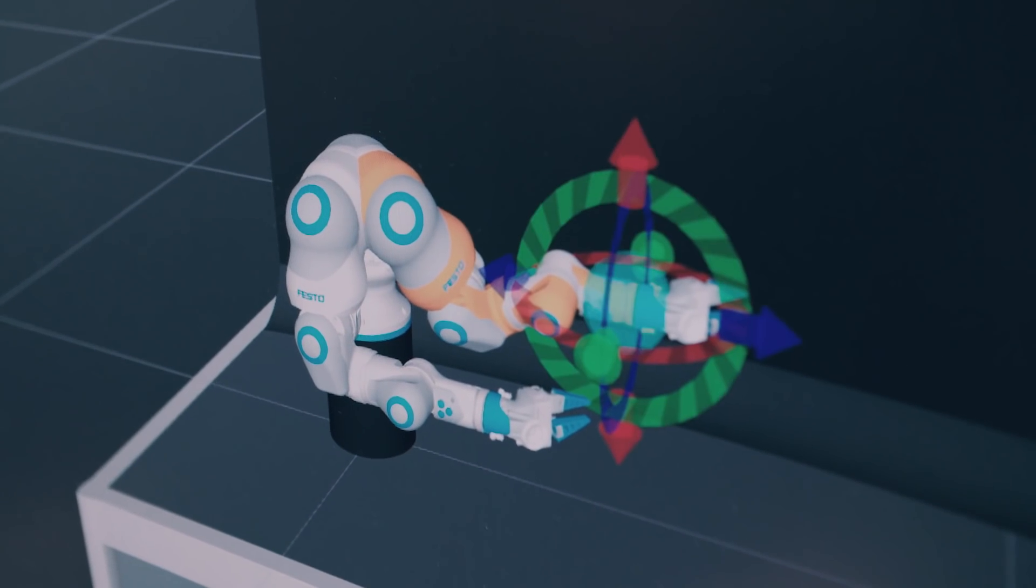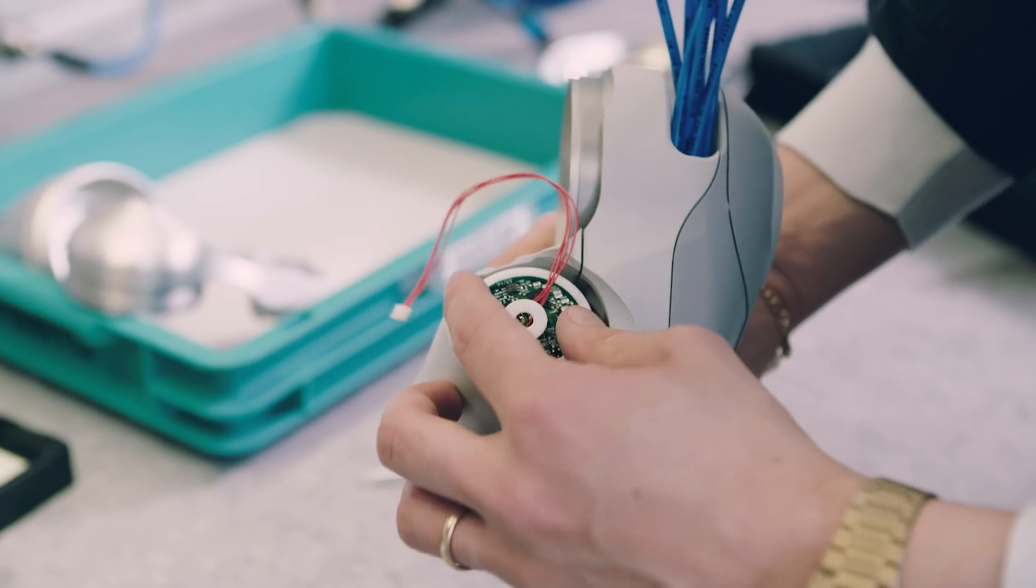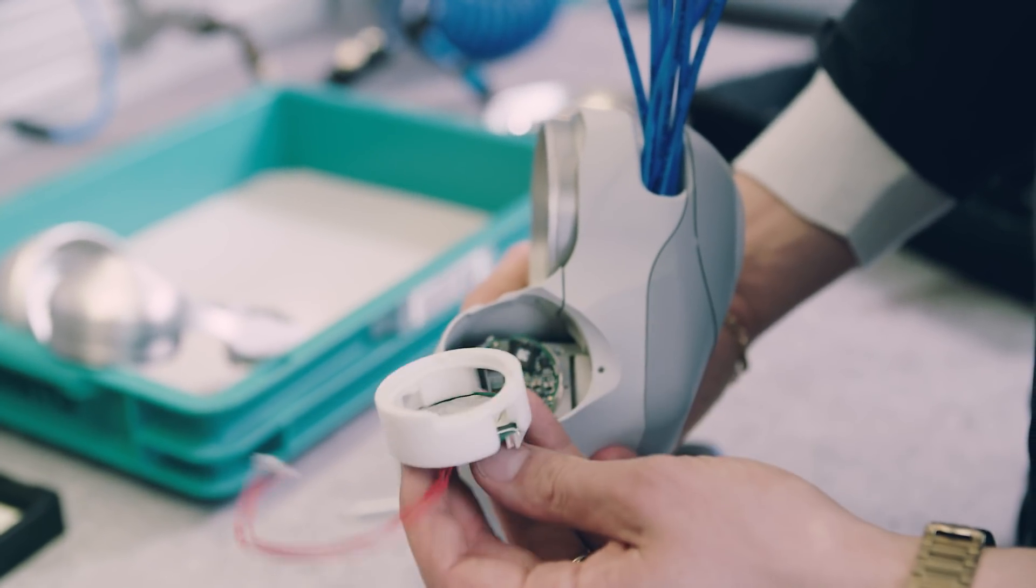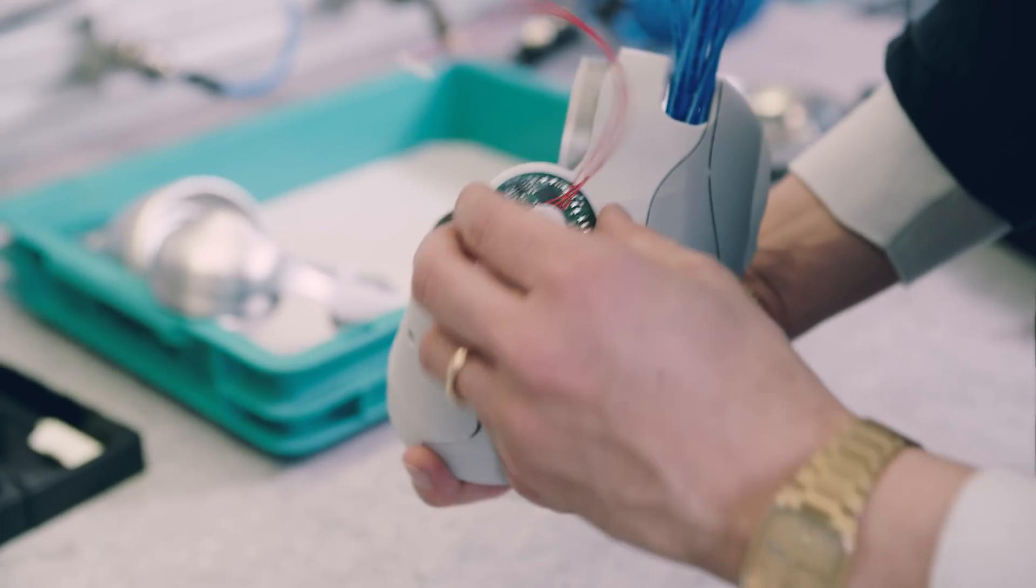This was then forwarded to the Festo motion terminal, which then also regulates the corresponding articulation values. Our robot has a small circuit board fitted in each joint, which reads out two pressure sensors under the code. These are sent via the CAN bus and read back into ROS, where the data is processed.